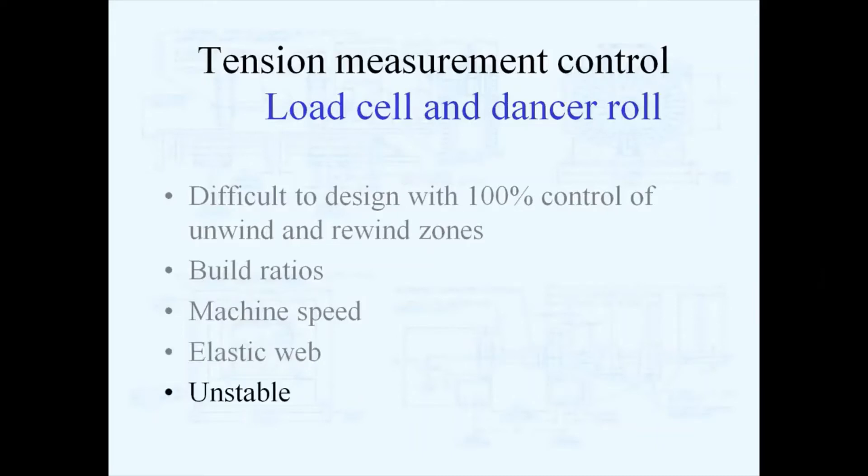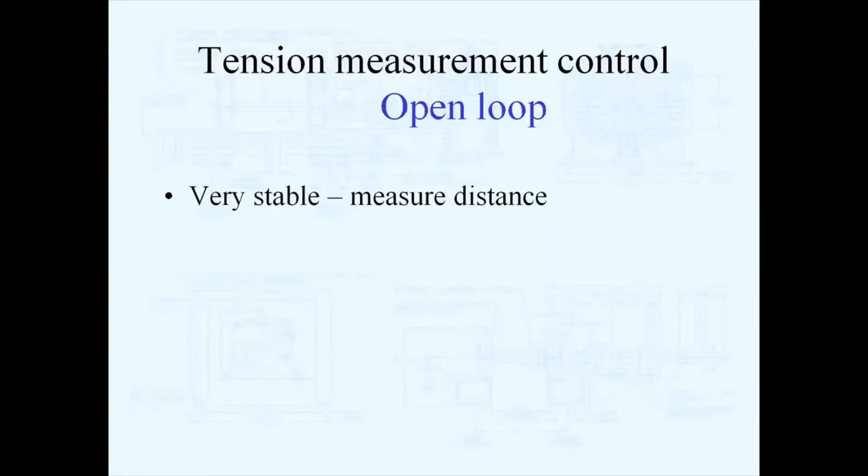In general, when you're trying to control the full range off of an unwind or onto a rewind, open loop systems are very stable because all they see is that radius. They're designed specifically to compensate for roll radius changes so they can be very stable. However, in general they can be inaccurate.